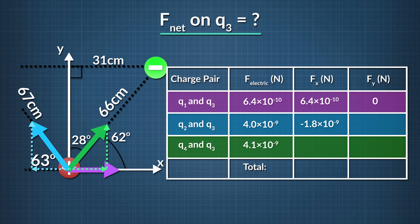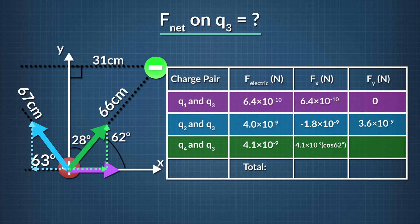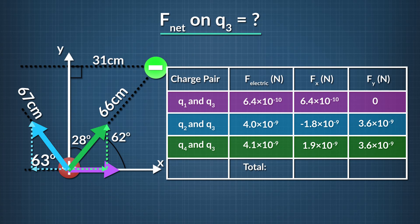The y component equals 4.0 times 10 to the negative ninth newtons times the sine of 117 degrees, which is 3.6 times 10 to the negative ninth newtons. To find the x and y components of the force of q4 on q3, multiply the force magnitude, 4.1 times 10 to the negative ninth newtons, times the cosine and sine of 62 degrees respectively. The x component equals 1.9 times 10 to the negative ninth newtons, and the y component equals 3.6 times 10 to the negative ninth newtons.